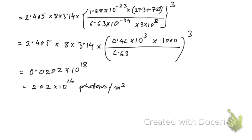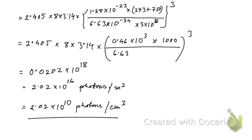Since the values were entered in SI units, the result is in photons per meter cube. But the question asks for per centimeter cube, so we divide by 10⁶ to convert, giving us the number of photons in one centimeter cube.